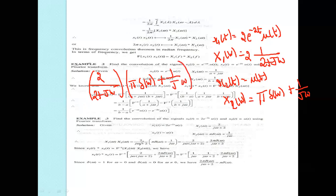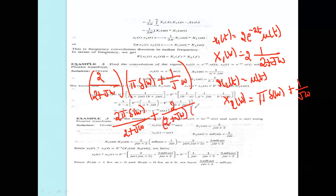Multiplying out: 2/(2 + jω) × π·δ(ω) and 2/(2 + jω) × 1/(jω). Expanding: 2π·δ(ω)/(2 + jω) plus 2/[jω(2 + jω)]. Using the partial fraction expansion method on 2/[jω(2 + jω)].